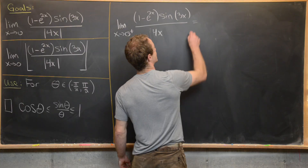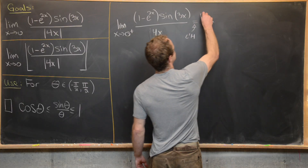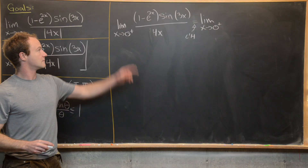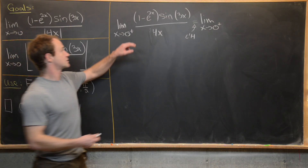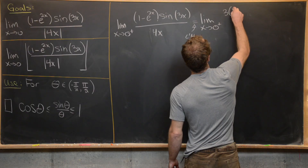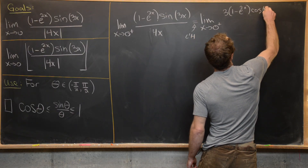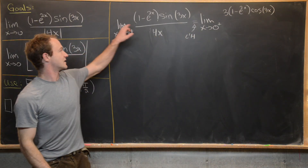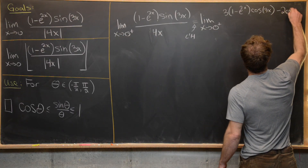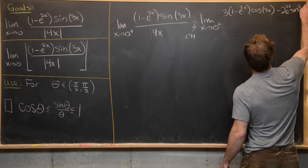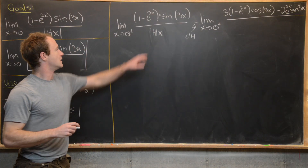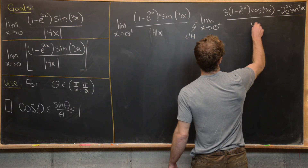Now we'll apply L'Hôpital's rule, giving us the limit as x approaches zero from above. We need to take the derivative of the numerator, which involves the product rule since we have 1 minus e to the 2x times sine 3x. That gives us the derivative of the sine function part, minus 2e to the 2x times sine 3x — the derivative of the 1 minus exponential part.